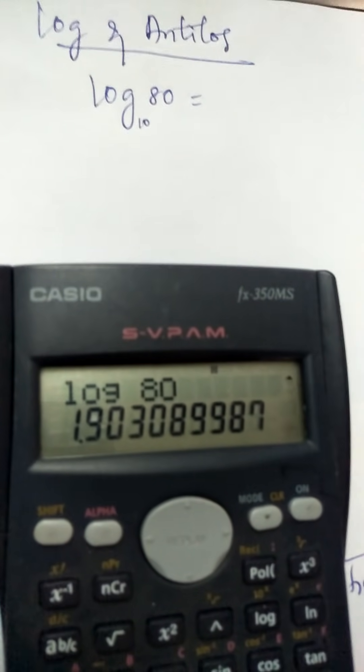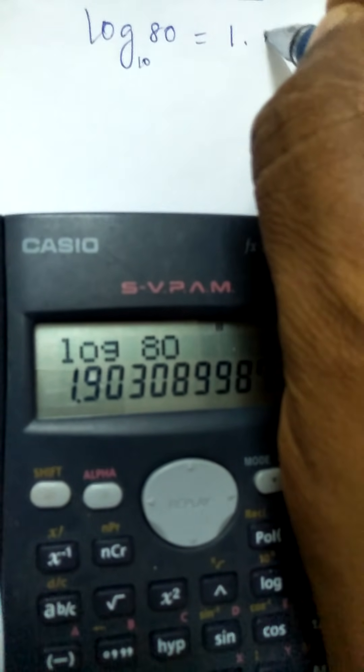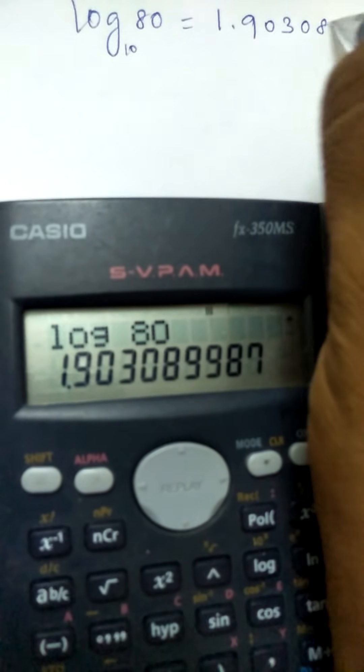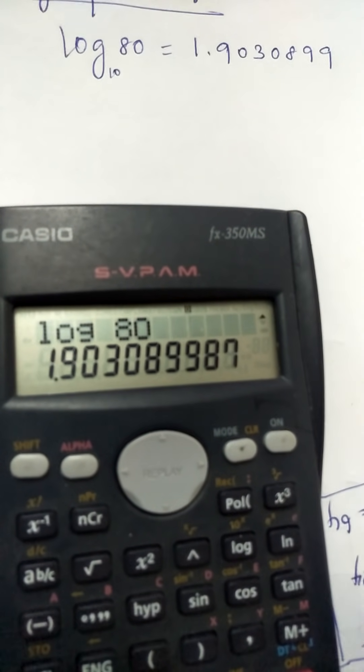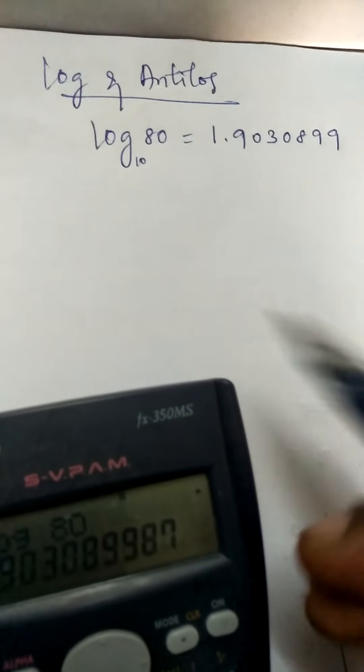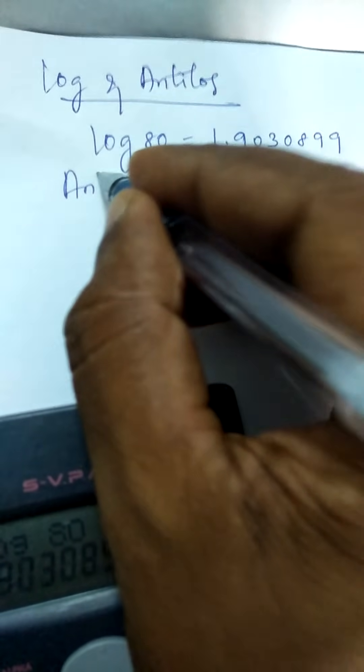So the value is 1.9030899. Now I am going to find the antilog value, and the log value of 1.9030899.